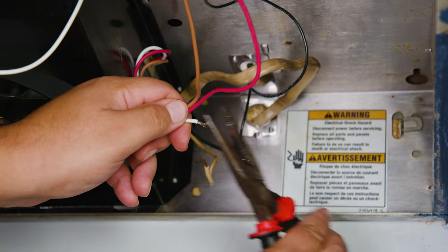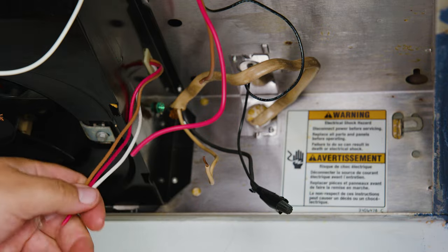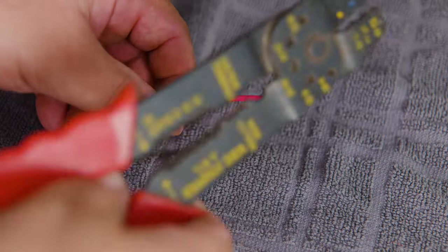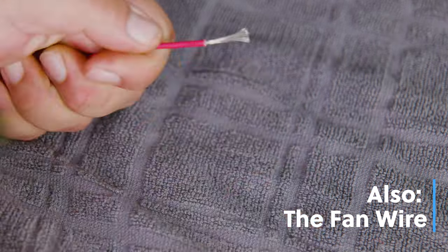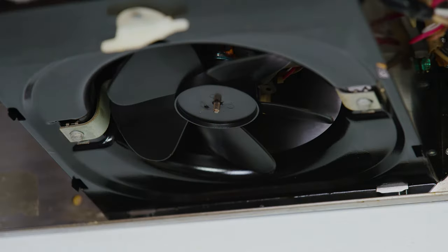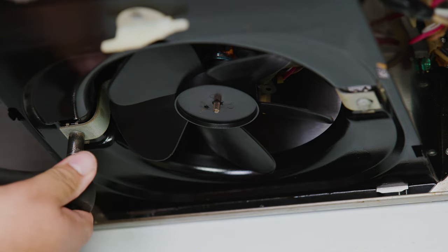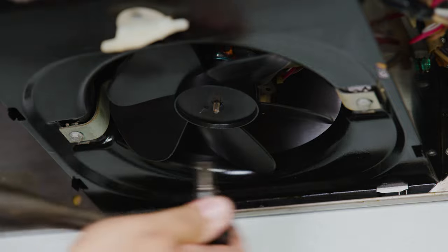And because here at the StataBox team we like to show worst case scenario, we want to show all three cases. In our case, what we're gonna do to make the connection with the new fan is we're just gonna cut and splice the remaining brown wire and red wire. Now that we have the wires disconnected or unplugged, depending on your situation, we're ready to remove the old fan.